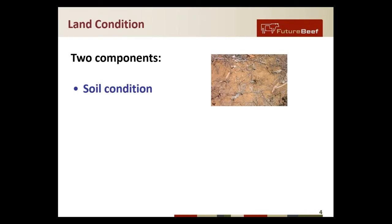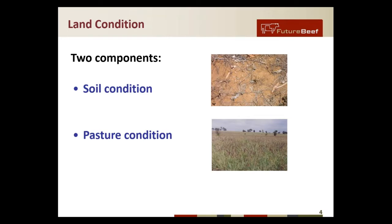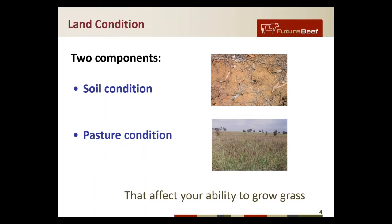Land condition is measured by two components: your soil condition and your pasture condition. If the soil is unstable or eroding, you can't grow as much grass. Pasture condition generally looks at the types of species you have — are they three-P species? Are they palatable, productive and perennial? And then the density of tussocks or grasses in the paddock — is there a lot of inter-tussock space or are they quite tightly packed together? Tree density is often mentioned in relation to land condition but we factor it in through its effect on pasture condition rather than assessing it separately.